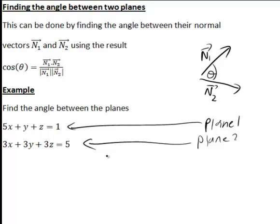We want to find the angle between them. So for plane 1, first of all, the normal vector n1 is going to be 5i plus 1j plus 1k in this case.